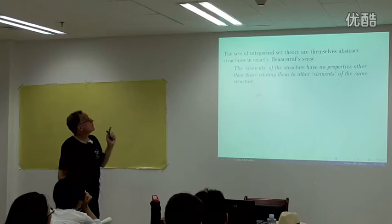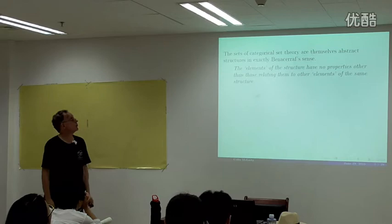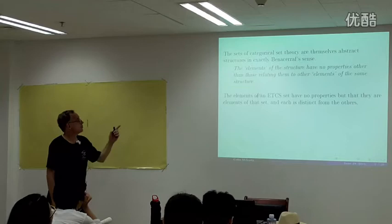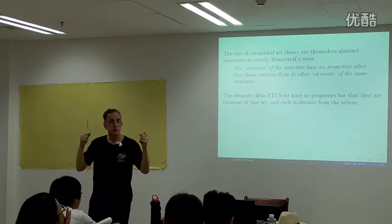The sets of categorical set theory are abstract structures. The elements of these sets have no properties other than those relating to other elements of the same set. The elements of an ETCS set have no properties except that they are elements of that set, and each is distinct from the others. The only relation between elements of a set is that one is equal to itself and not equal to the others.